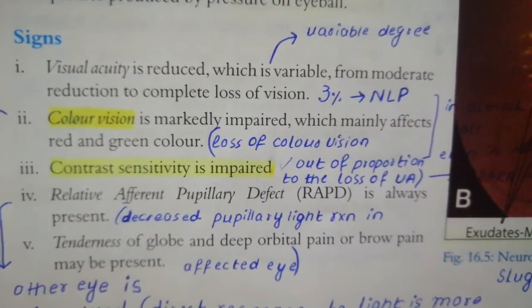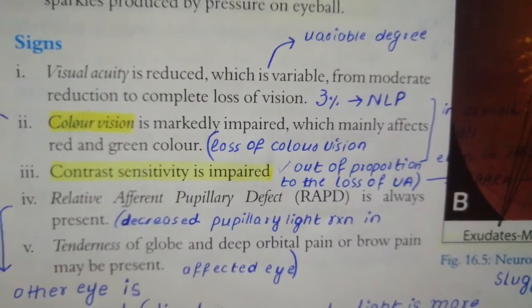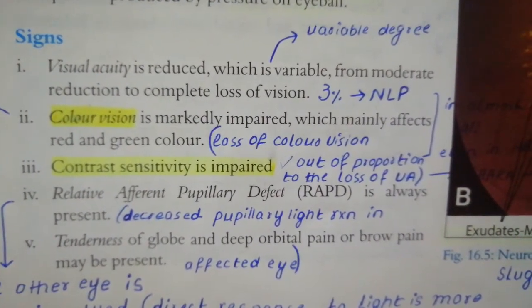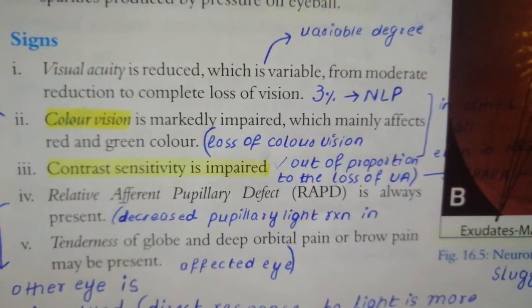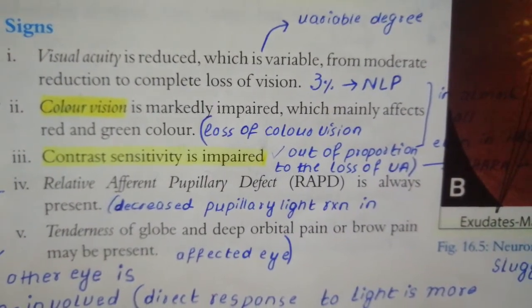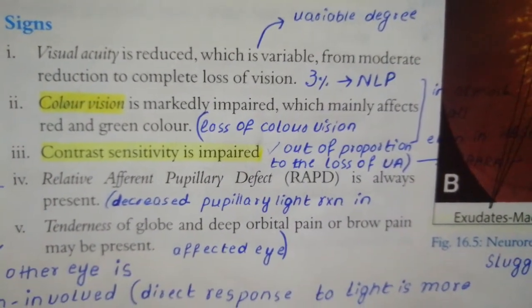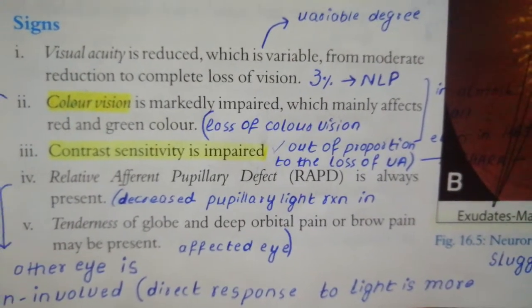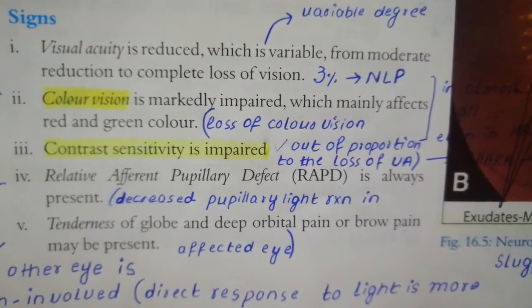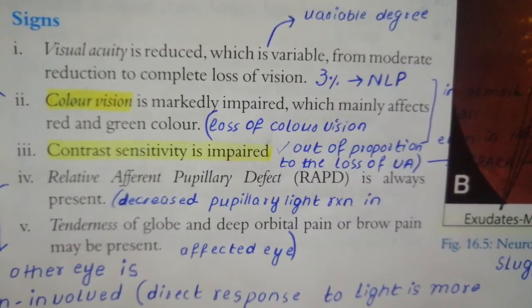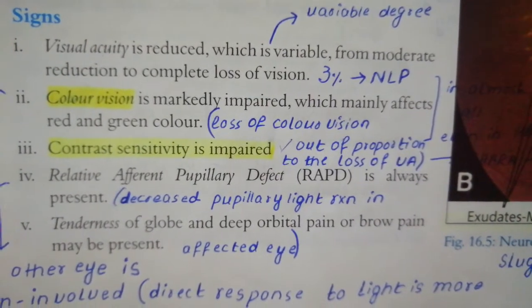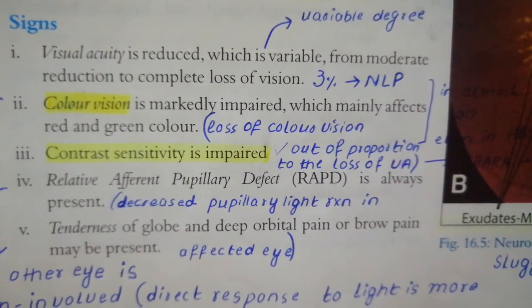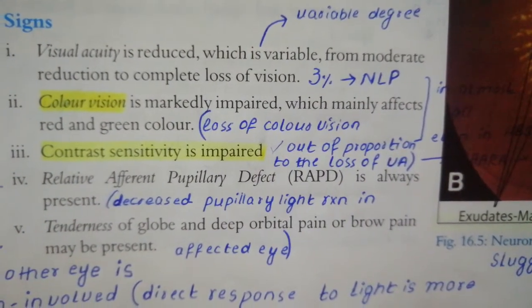Pupillary reflexes are assessed using the swinging light test. There is a relative afferent pupillary defect (RAPD) finding, because the optic nerve is part of the afferent limb of the pupillary reflex. If the right eye is affected, swinging the light from the left to the right eye will show a reduced direct response in the affected eye compared to the consensual response. RAPD is a characteristic finding in optic nerve pathology.